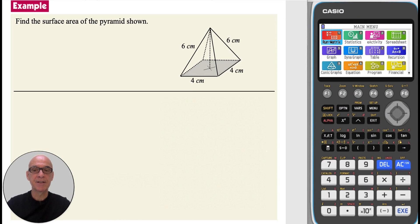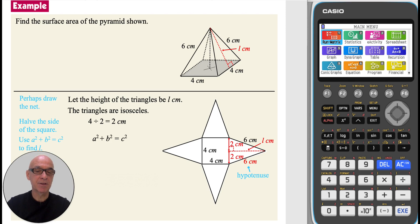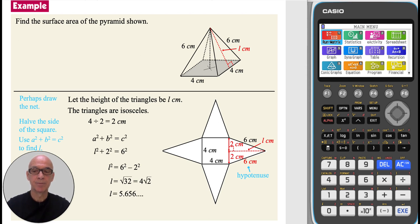To find the surface area of this pyramid, again start by drawing the net. The triangles are isosceles. Halving the side of the square as shown, and identifying that Pythagoras' theorem can be used to find L. Substituting in the values, rearranging and performing the calculation gives the value shown. So the height of the triangle is 5.6 cm, correct to three significant figures.